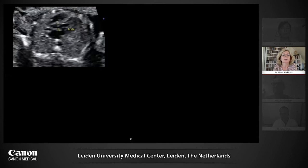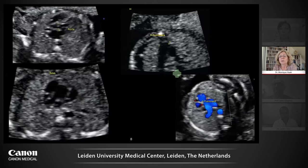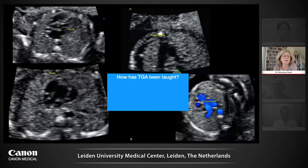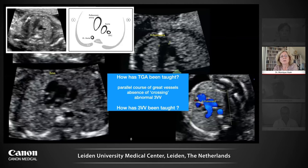Here is a missed transposition case. You can see attempts to make the three-vessel view, confirmed with color Doppler. Looking at such cases, I questioned how we have taught people to recognize transposition in the past. The key features taught are: parallel course, absence of crossing, and an abnormal three-vessel view. But why are sonographers thinking a particular image is a normal three-vessel view? Comparing it to the ISWOC guideline cartoon, the pictures are not that different, and I can really understand how this gets misinterpreted as a normal three-vessel view.